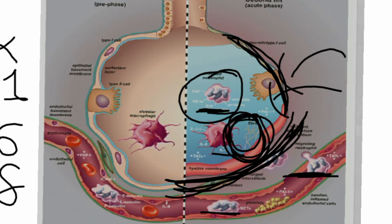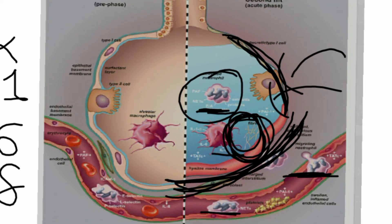Why is it called Diffuse Alveolar Damage? Diffuse means more than 50%, and the alveoli get damaged — that is why it is called diffuse alveolar damage. So this is the simple pathogenesis of ARDS. Now let's talk about its morphology.